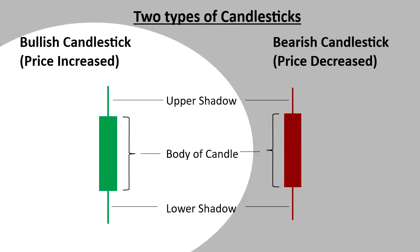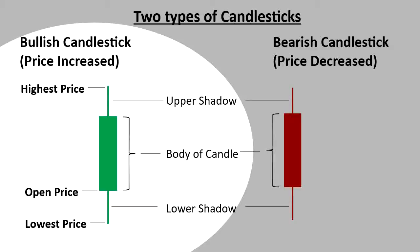Now let's see what those parts tell us about the price. The top of the upper shadow tells us the highest price, and the bottom of the lower shadow tells us the lowest price. The bottom of the body of the candle tells us the open price, and the top of the body tells us the close price. The close price is higher than the open price, and that's what makes the candle a bullish candle, represented in green.